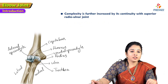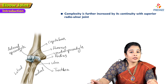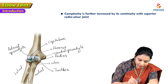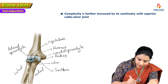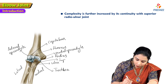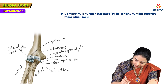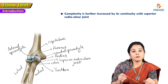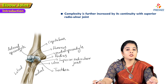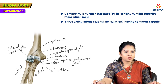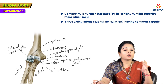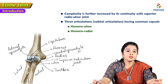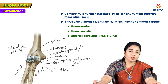The complexity of the elbow joint is further increased by its continuity with the superior radio-ulnar joint. The joint cavity communicates with the superior radio-ulnar joint. Thus there are three articulations in the elbow region — the cubital articulations — enclosed in a common capsule: the humero-ulnar, humero-radial, and superior radio-ulnar or proximal radio-ulnar joint.